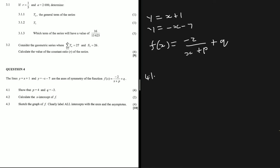Question 4.1 says show that p equals 4 and q equals minus 3. One thing to note about the axis of symmetry: an axis of symmetry cuts a shape or a graph in equal halves. So the equation y equals x plus 1 will cut this hyperbola in equal halves, and y equals minus x minus 7 will also cut the hyperbola in equal halves.